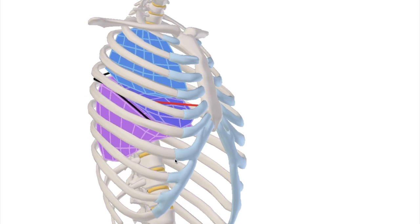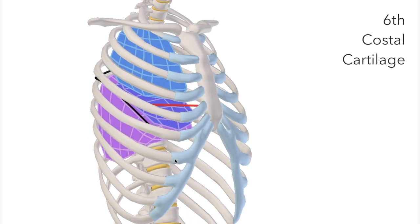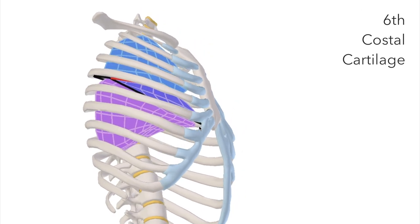Now we're told that the oblique fissure, in black, corresponds to the sixth costal cartilage at the front, so let's find that. One, two, three, four, five, six, that's great.